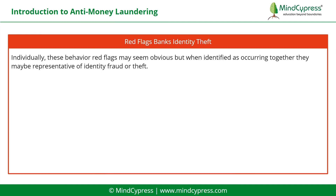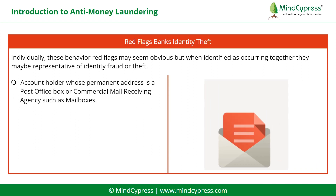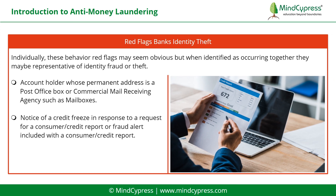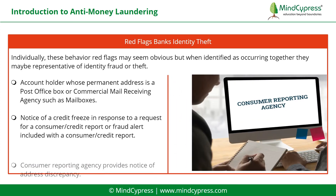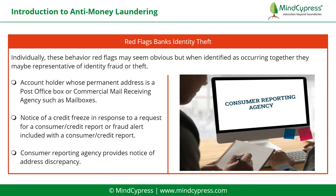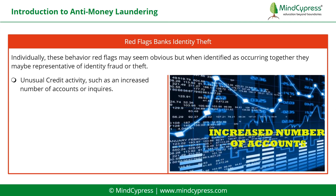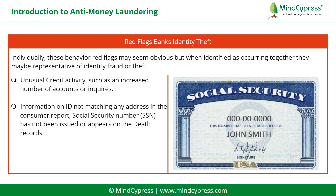Individually these behavior red flags may seem obvious, but when identified as occurring together, they may be representative of identity fraud or theft. Identity theft red flags include: account holder whose permanent address is a post office box or commercial mail receiving agency such as Mailboxes; notice of a credit freeze in response to a request for a consumer credit report, or fraud alert included with a consumer credit report; consumer reporting agency provides notice of address discrepancy; unusual credit activity such as an increased number of accounts or inquiries; information on ID not matching any address in the consumer report; and Social Security Number (SSN) that has not been issued or appears on the death records.